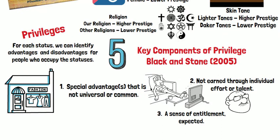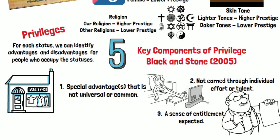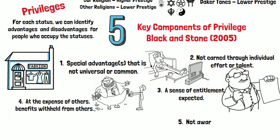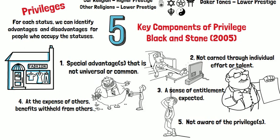Second, a privilege is not earned through individual effort or talent. Third, there is a sense of entitlement — it is expected by the people who occupy a particular status. Fourth, the privilege usually comes at the expense of others — we are withholding benefits such as quality education or quality healthcare. And fifth, the people who have the privilege are usually not aware of the privileges they have.